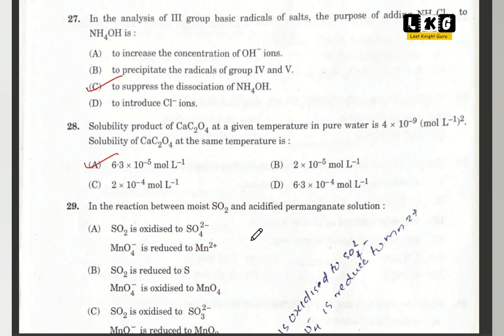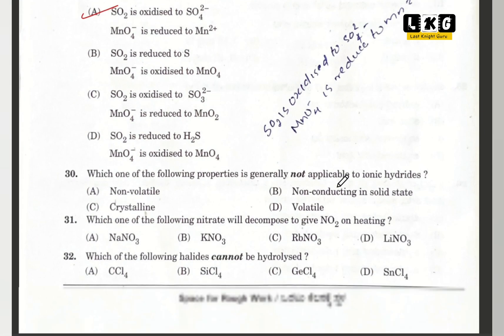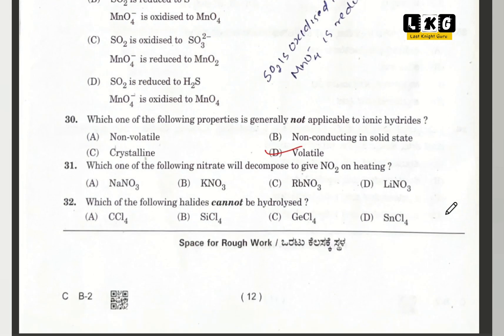Question number 29: in the reaction between SO2 and acidified permanganate solution, option A is correct — SO2 is oxidized to SO4 2-. Question number 30: which property is generally not applicable to ionic hydrides? Option D — volatile substances. Question number 31: which of the following nitrates will decompose to give NO2 on heating? LiNO3, option D is correct. Question number 32: which halide cannot be hydrolyzed? CCl4, option A is correct.